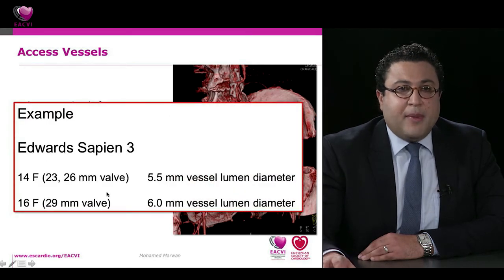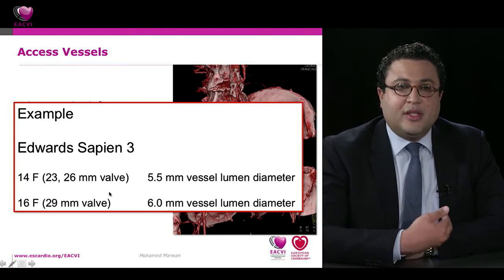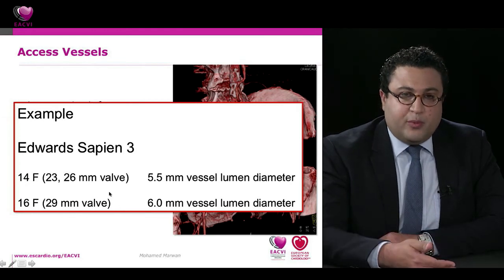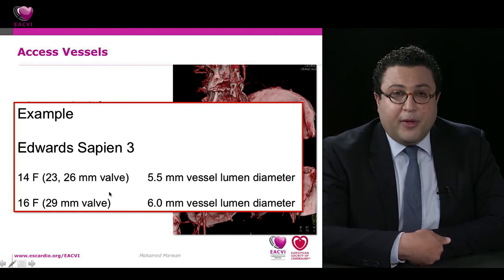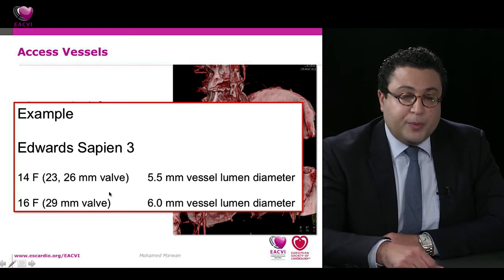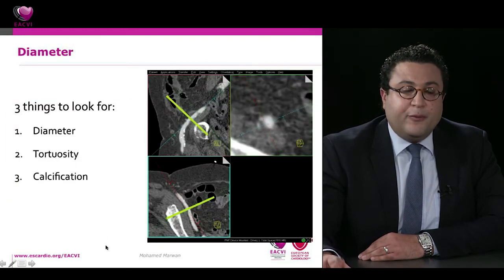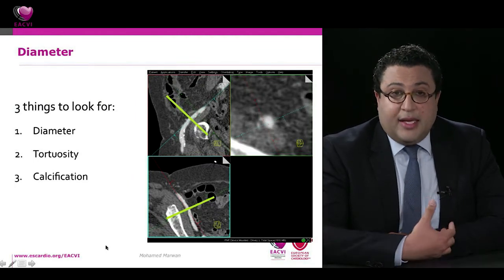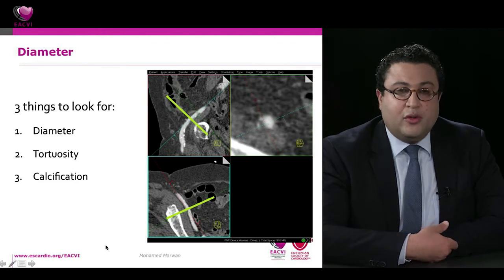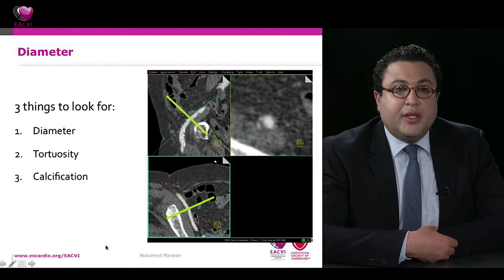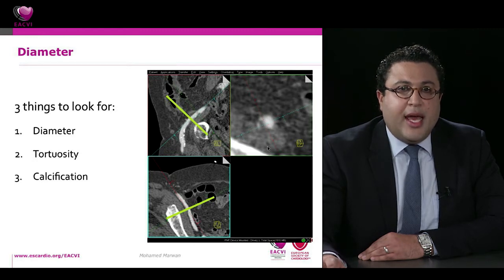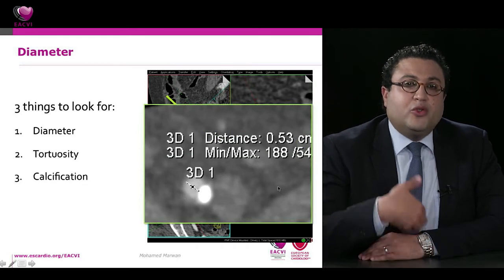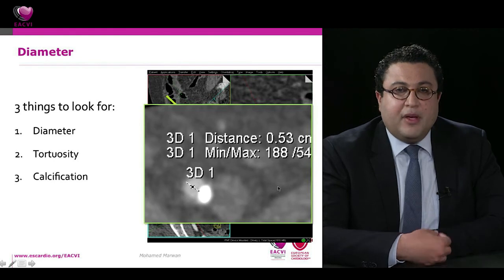For each vendor, there are minimum luminal diameters required for different prostheses, so you must know which device is planned and accordingly report whether transfemoral access is possible — and if so, which side is preferred. When reporting diameters, it is important to use strictly orthogonal cross-sectional measurements to avoid overestimating minimal luminal diameter. If you have a femoral or external iliac artery, the cross-section must be circular and strictly perpendicular to the vessel axis.